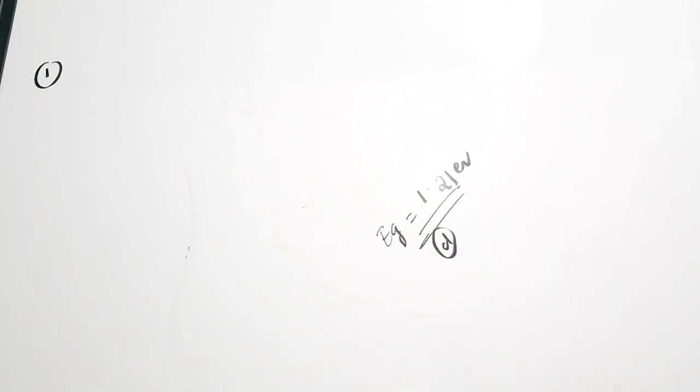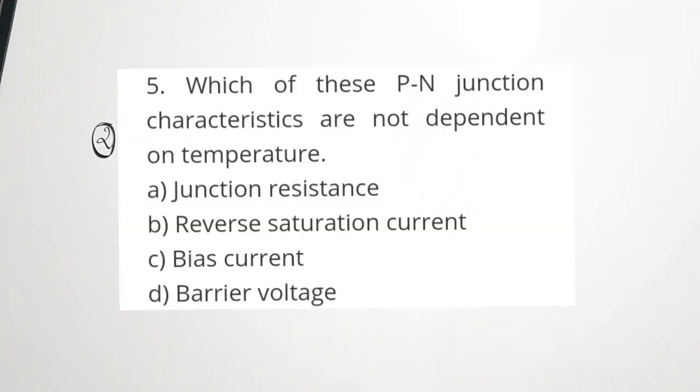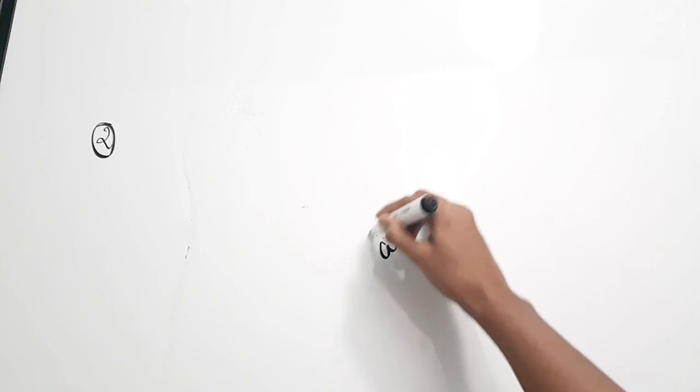Moving on to the second question. Which of these P-N junction characteristics are not dependent on temperature? The four options are: A, junction resistance; B, reverse saturation current; C, bias current; D, barrier voltage. As temperature increases, current also increases, so reverse saturation current and bias current are temperature-dependent. Temperature is also inversely proportional to voltage. So the other characteristics — other than voltage and current — should be temperature-independent. The correct answer is A, junction resistance.